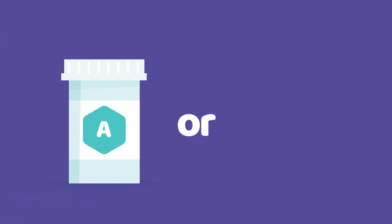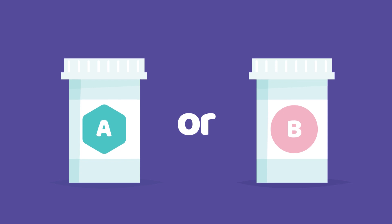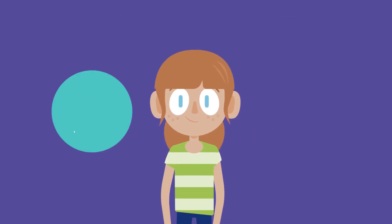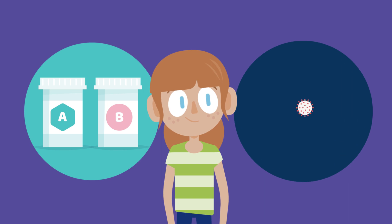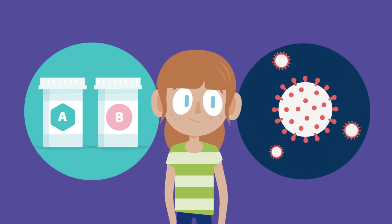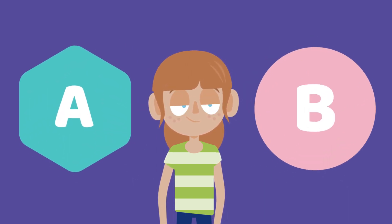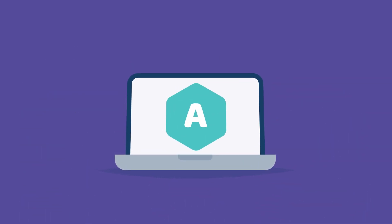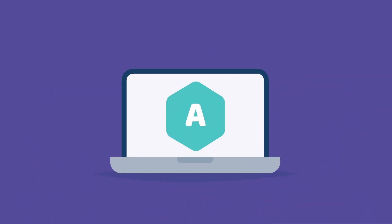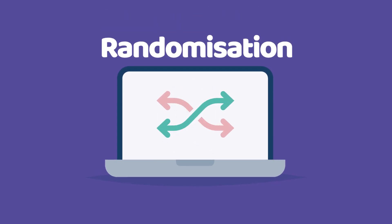In most trials, individual people are asked to take one of the treatments being studied. For example, Sarah agreed to join a trial comparing two medicines to treat COVID-19 in children: Medicine A and Medicine B. A computer is used to decide if Sarah gets Medicine A or Medicine B. This is called randomisation.